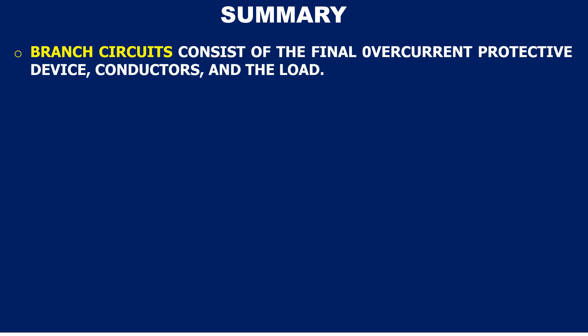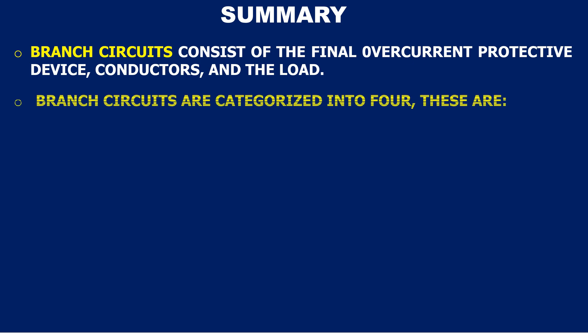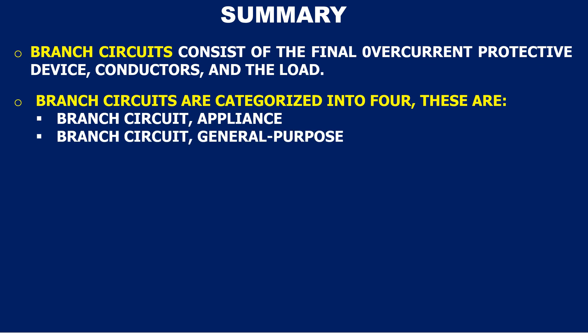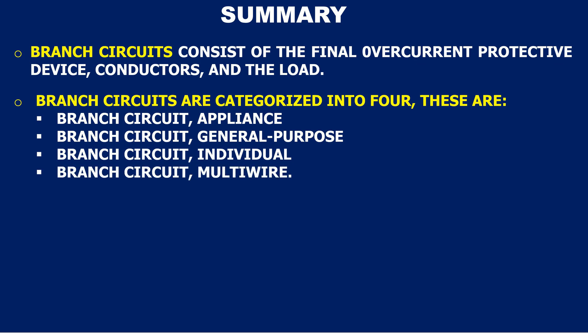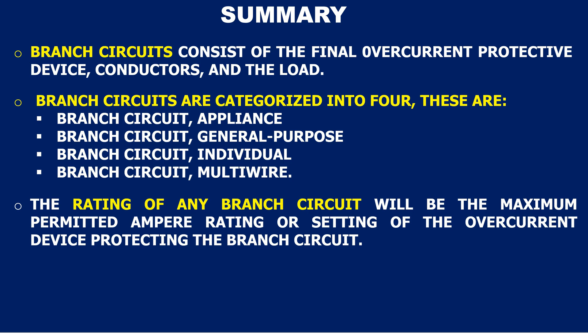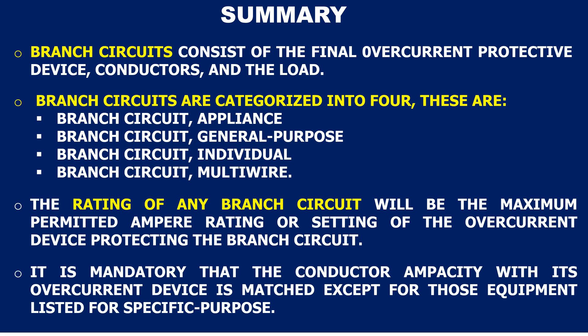To summarize our topic: branch circuits consist of the final overcurrent protective device, conductors, and the load. Branch circuits are categorized into four: 1. Branch circuit appliance. 2. Branch circuit general purpose. 3. Branch circuit individual. 4. Branch circuit multi-wire. The rating of any branch circuit will be the maximum permitted ampere rating or setting of the overcurrent device protecting the branch circuit. It is mandatory that the conductor ampacity with its overcurrent device is matched.